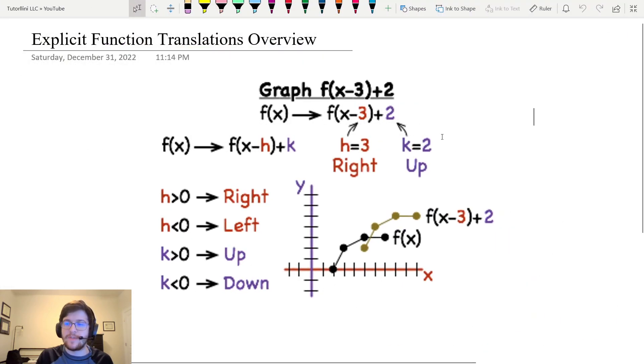So before we look at Desmos, let's do a quick overview on what a function translation is. A function translation is when you move a function in the four cardinal directions, like the ones on a compass—north, south, east, west—without changing anything else about the function.